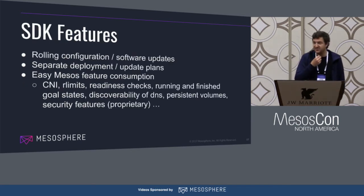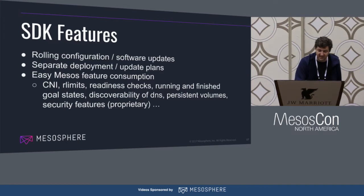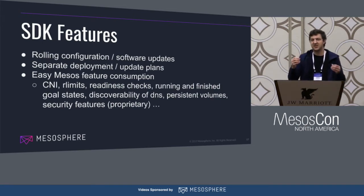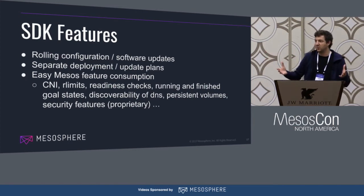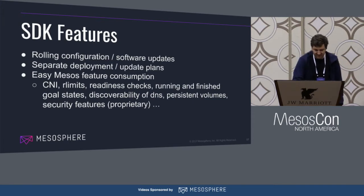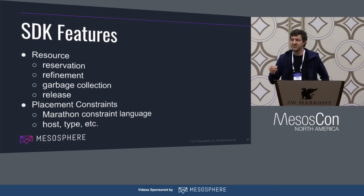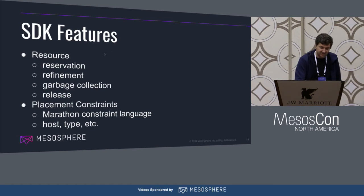Here's the SDK features section. I would say the core mechanic of the whole system is rolling configurations and software updates — you say I want to make a change to my service, and it restarts all your tasks. There are also separate deployment and update plans, meaning sometimes you want to install a service one way, but run a different orchestration pattern for updates or upgrades. You can decide to use different deployment strategies based on that scenario. It integrates with many Mesos features and does resource reservation for everything all the time.